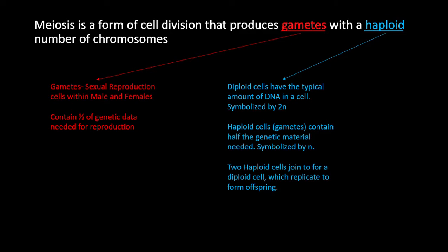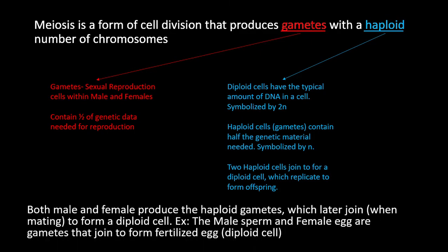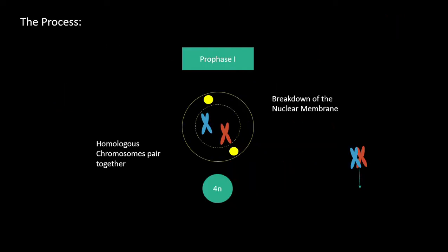Haploid cells or gametes contain half the genetic material needed, symbolized by n. Two haploid cells join to form a diploid cell which replicates to form offspring. For example, the male sperm and the female egg are gametes that join to form the fertilized egg, which is a diploid cell.